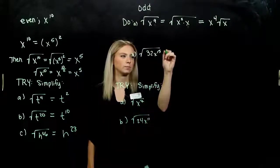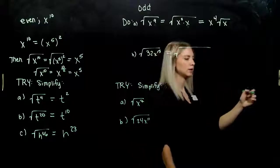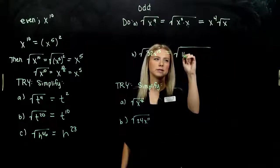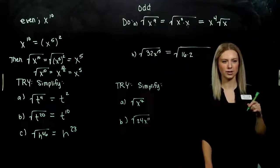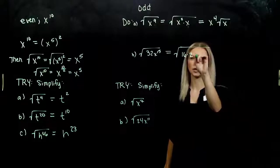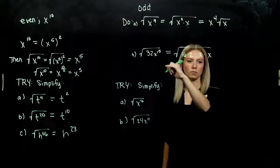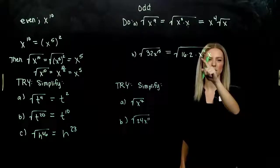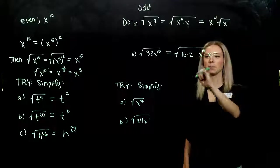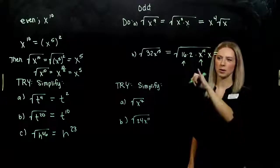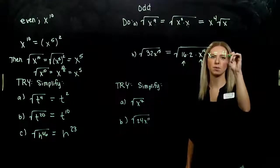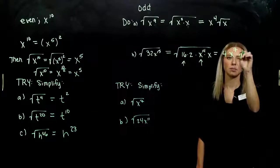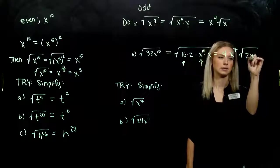Next example — we also have a constant out front. For 32x¹⁵: break 32 into a perfect square and another number — 16 and 2. And x to the fifteenth: 15 is not divisible by 2, but the largest even factor is 14, with one left over, since when we multiply same-base terms we add the powers. So evaluating out: square root of 16 is 4, even power so divide by 2 — 7 factors come out — and we're left with the square root of 2x.